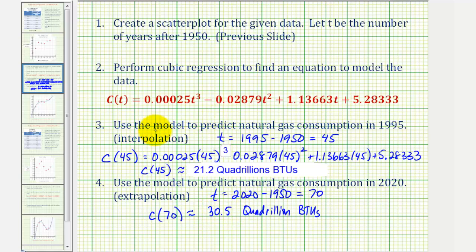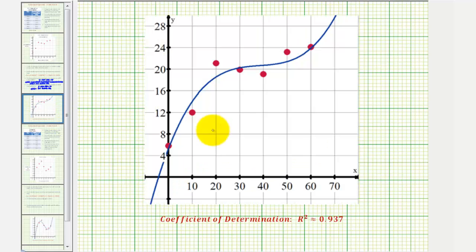Now that we've answered these questions, let's go back one more time and take a look at the scatter plot and the graph of our model. Again, the red points represent the scatter plot and the blue function is our cubic function that we found by performing cubic regression. And again, our coefficient of determination, or r squared, was approximately 0.937.